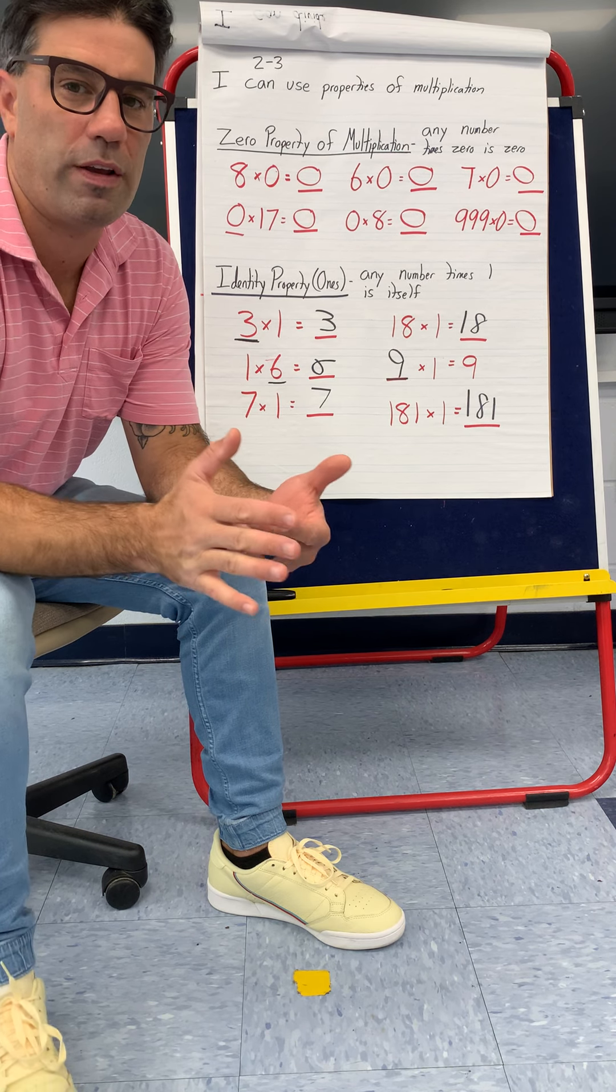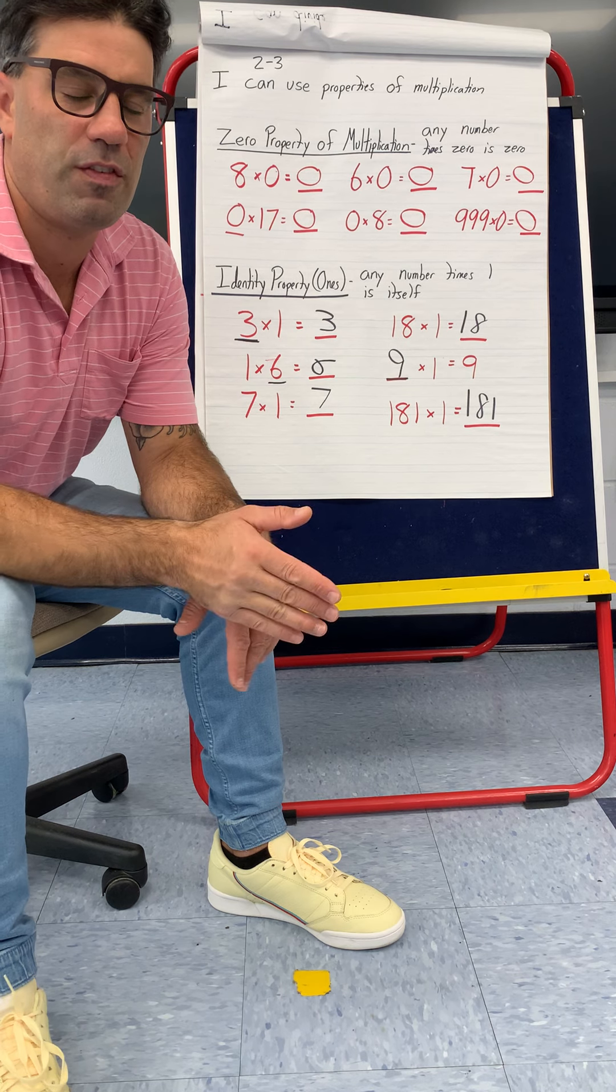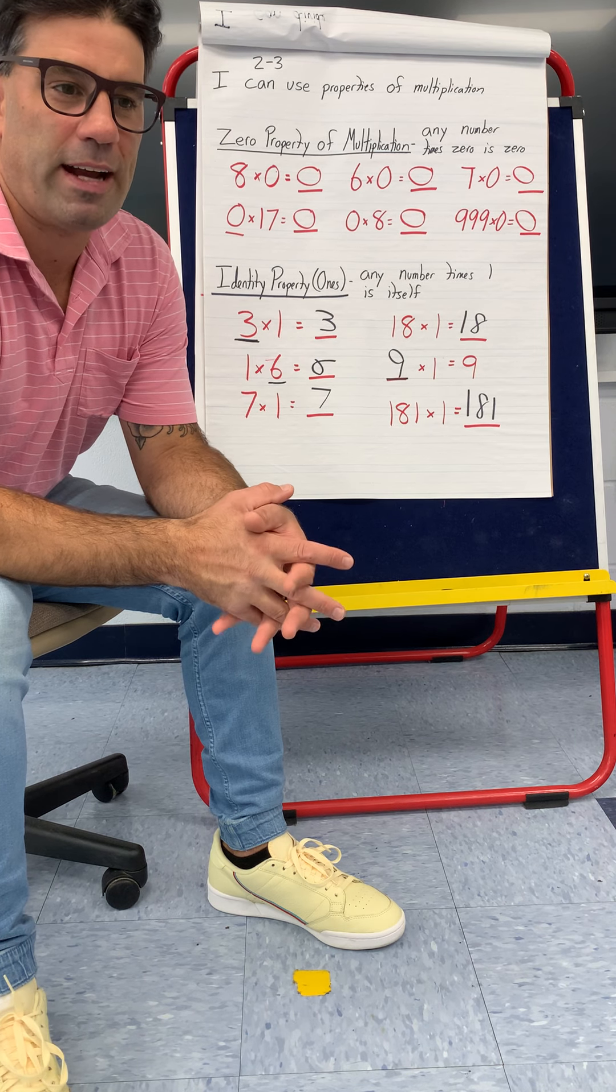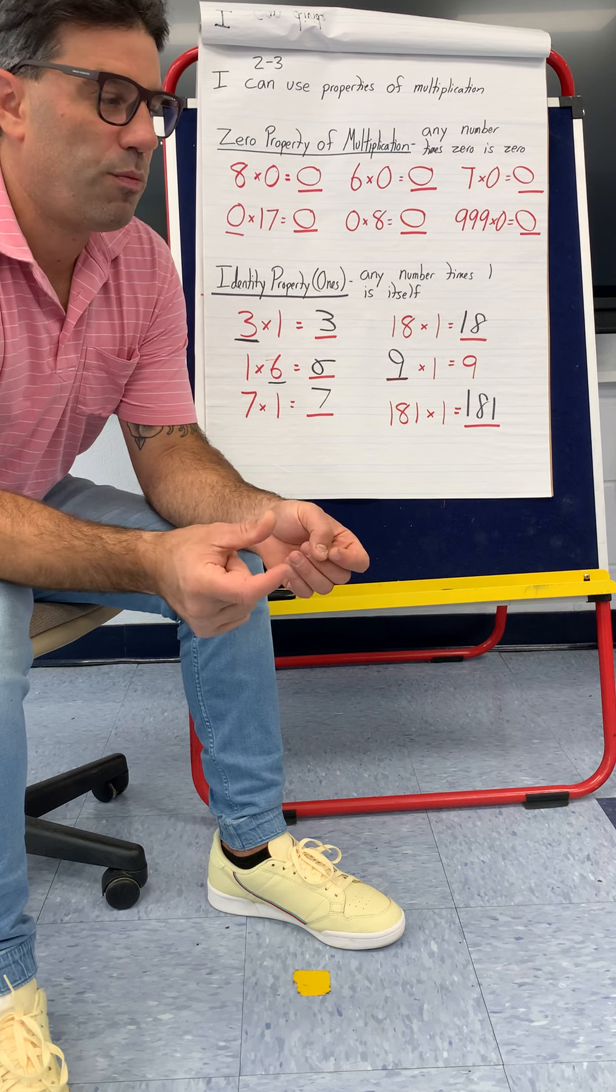And go by five: five, ten, fifteen, twenty, twenty-five, thirty, thirty-five, forty, forty-five, fifty, fifty-five, sixty.